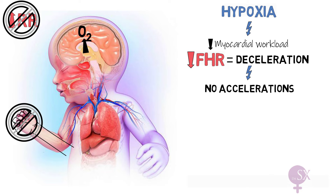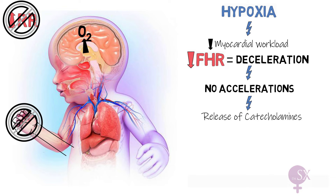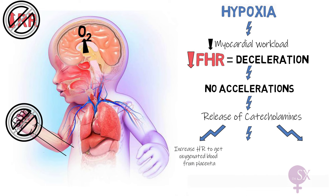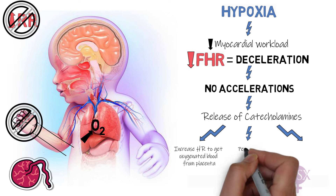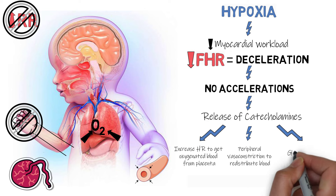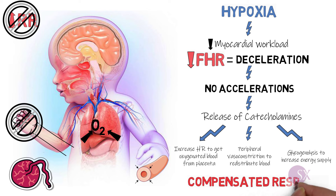Now, if hypoxia progresses, the fetus will start to release catecholamines — adrenaline and noradrenaline — and this will help the fetus to conserve further oxygen in three ways. First, the catecholamines will induce an increase in fetal heart rate, which will help to get more oxygenated blood from the placenta to the fetus. Catecholamines will also result in peripheral vasoconstriction, therefore diverting oxygen to the vital organs. Lastly, catecholamines will also induce breakdown of glycogen to glucose to increase the energy available to be used by the fetal heart.